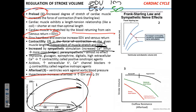Interestingly, the parasympathetic system has pretty much no effect on the strength of contraction — only sympathetic. Now, if everything comes down to calcium, what will increase contractility? If contractility depends on the amount of calcium in the cell, then calcium itself will increase it. If you take calcium chloride and inject it into someone, the heart will pump stronger.